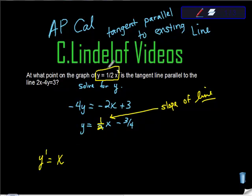So the slope of my function, this function right here, for any given x value is x. So I'm going to say x equals the slope of the line that they gave me, equals one half. Well that's interesting because there's part of the answer.